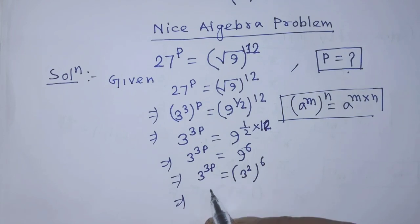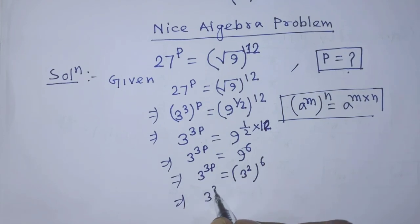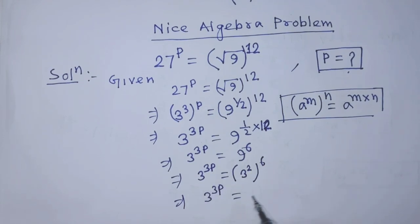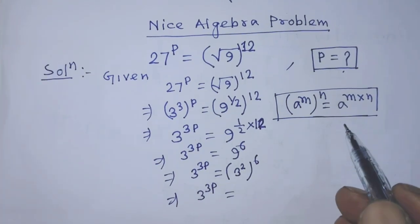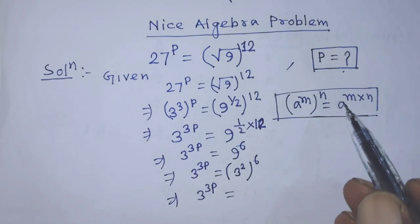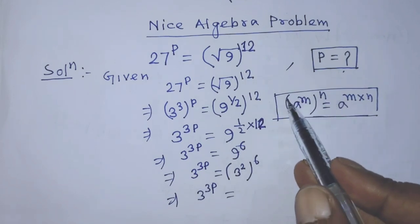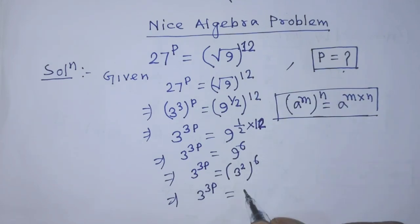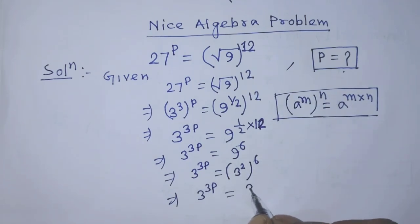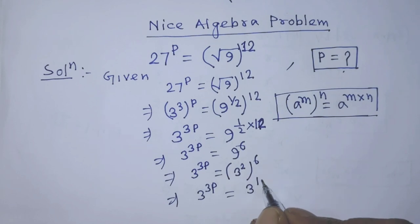Applying the same formula again, it will be 3 to the power 3p is equal to 3 to the power 12.